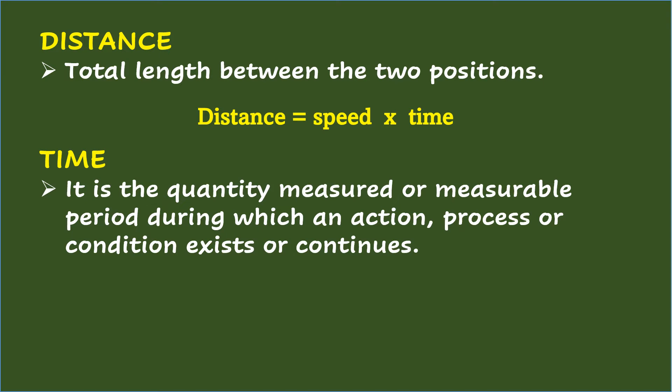Time is the quantity measured or measurable period during which an action, process, or condition exists or continues. To get the time, use the formula: time equals distance divided by speed.